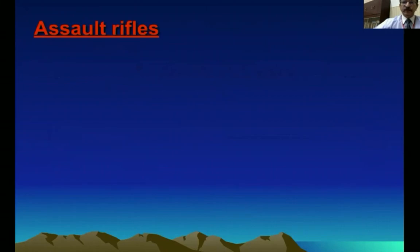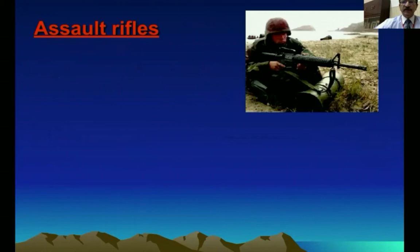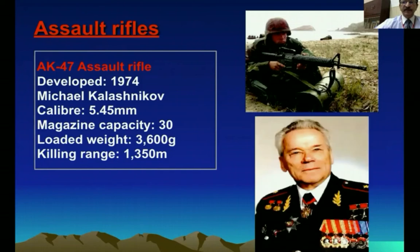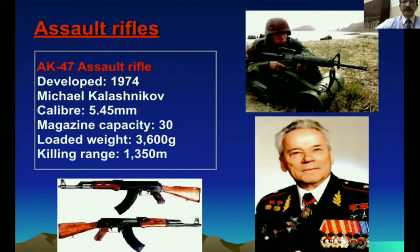Then came the assault rifle — the most modern and sophisticated weapon we commonly hear about: the AK-47 Kalashnikov. This was invented by Russian scientist Mikhail Kalashnikov in 1947, and the gun is named after him as the AK-47 Kalashnikov.